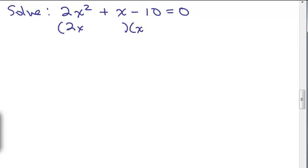This has got to be a 2x and a x and then I have to figure out what to put here and here. I think it's 5 and 2 plus 5 and minus 2. Let's see, does that give you the right middle term? 5x minus 4x, yes, is 1x. Gives you the right first term. 2x times x is 2x squared. Gives you the right last term. 5 times negative 2 is negative 10. All right.